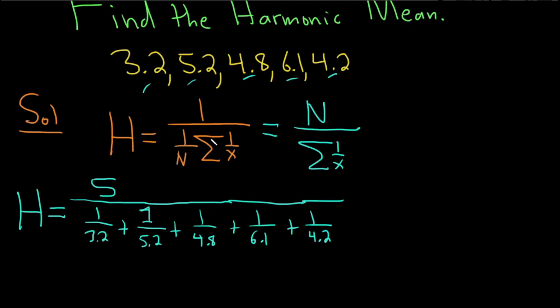So this is 5 divided by 1 divided by 3.2 plus 1 divided by 5.2 plus 1 divided by 4.8 plus 1 divided by 6.1 plus 1 divided by 4.2. And we end up with, looks like roughly,